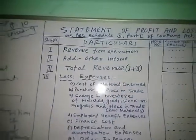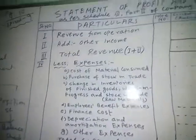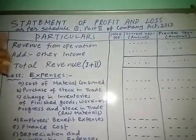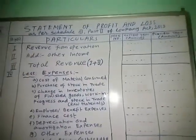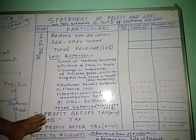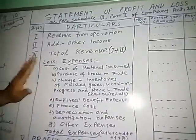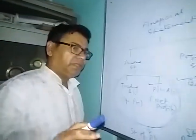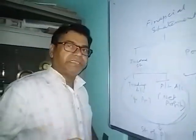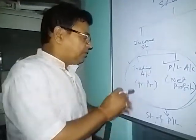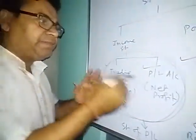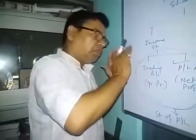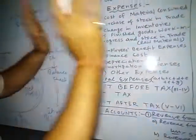Now, in this vertical form, the company has to prepare the statement of profit and loss — not a trading account, not a profit and loss account. This is a statement, not an account. But you will see later on that whatever items of trading and P&L were coming, all those items are involved here.